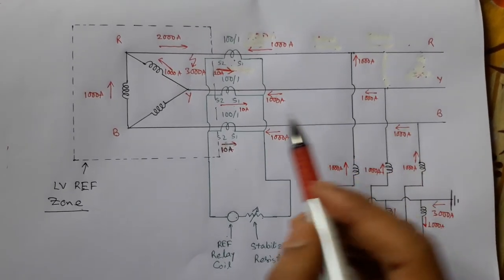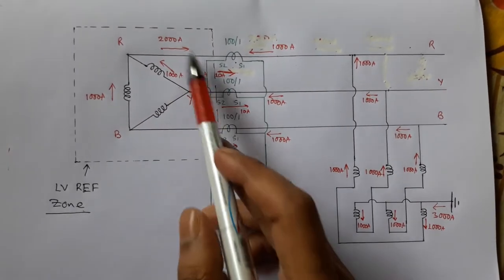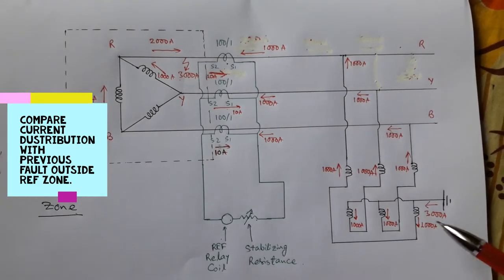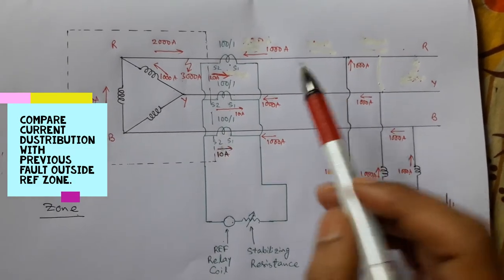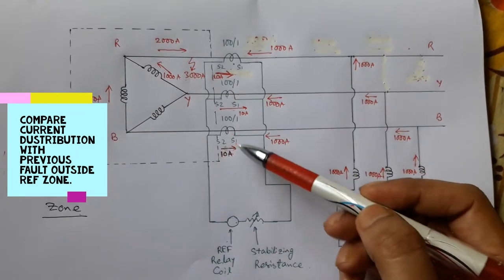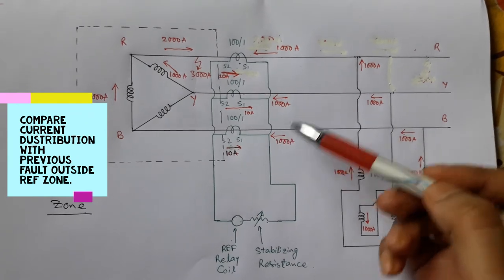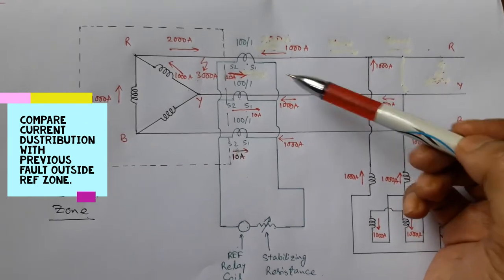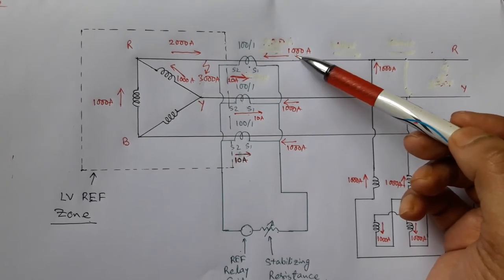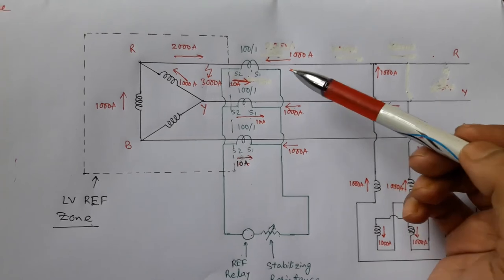But if the same fault of 3000 ampere occurs inside the protection zone, then this is how the primary current will flow. In that case, notice that the yellow and blue phase currents are the same and directions are also the same. But in the case of the red phase, the current is reduced from 2000 ampere to 1000 ampere, and the direction also reversed.